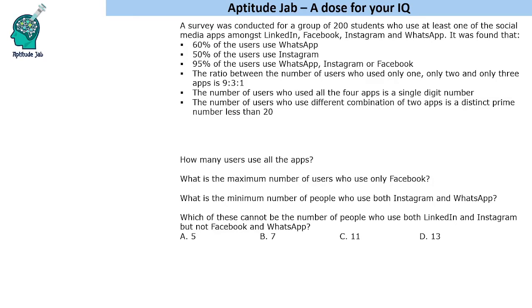Hello everyone, welcome to Aptitude Jab. This problem says that there was a survey conducted for a group of 200 students who use at least one of the social media apps amongst LinkedIn, Facebook, Instagram and WhatsApp and some information is given about them.